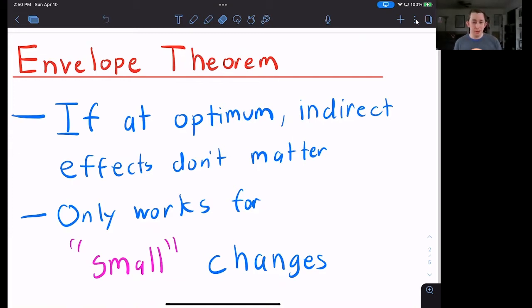So if you remember we were talking about the envelope theorem and we said, if you're at the optimum, only your direct effects matter, your indirect effects don't matter. This only works for marginal changes.